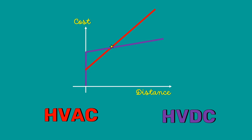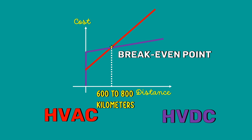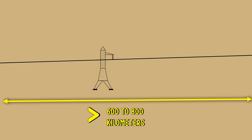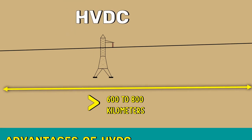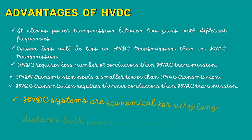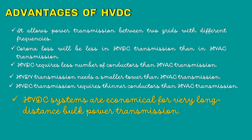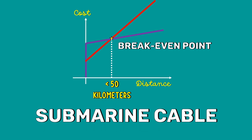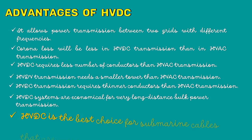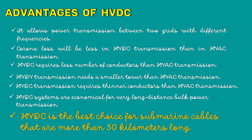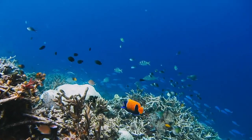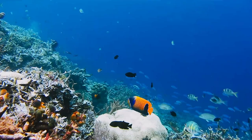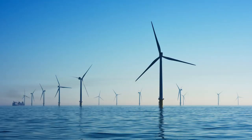The point of intersection on the graph is called the breakeven point. The breakeven distance for overhead transmission lines is estimated to be around 600 to 800 kilometers — so beyond this distance, HVDC is the best choice, as HVDC systems are economical for very long distance bulk power transmission. The breakeven distance for submarine cables is less than 50 kilometers, making HVDC the best choice for submarine cables over 50 kilometers long, such as transmitting electricity generated from the ocean to the shore.